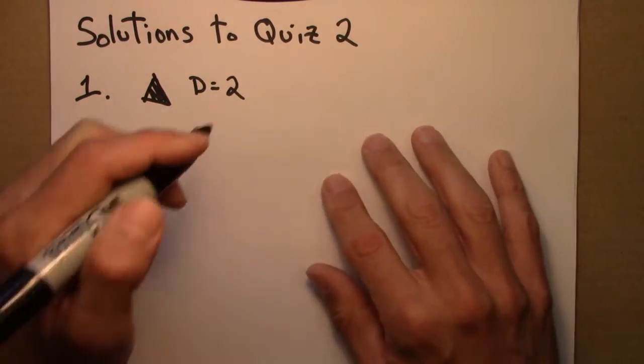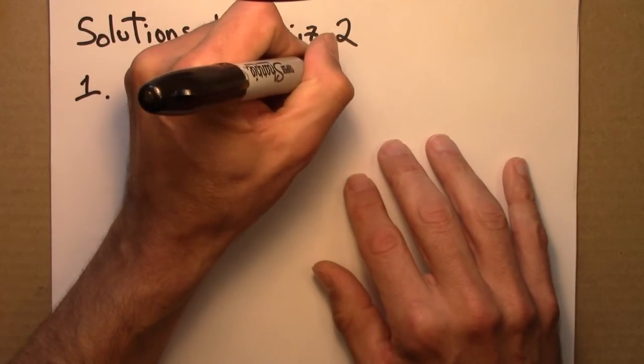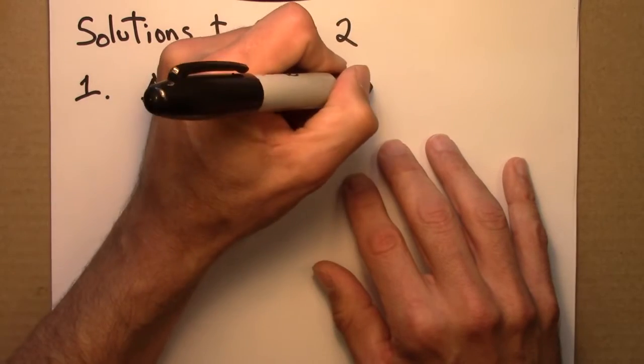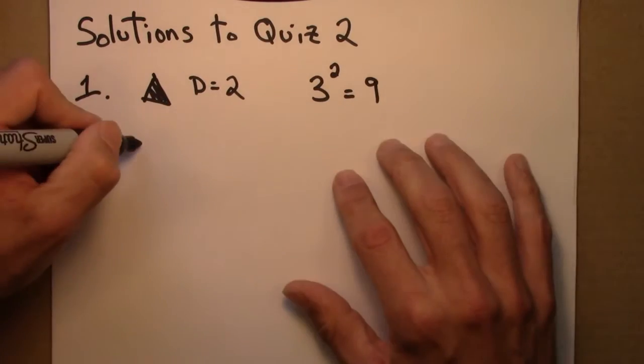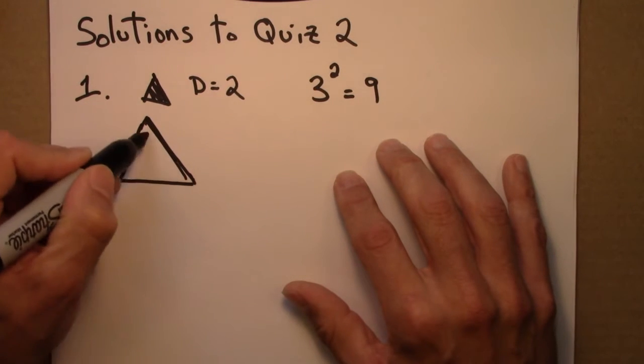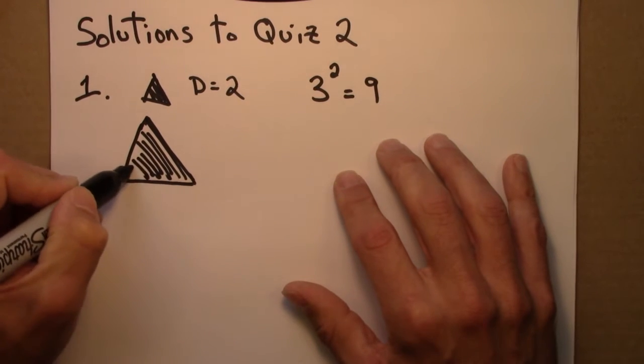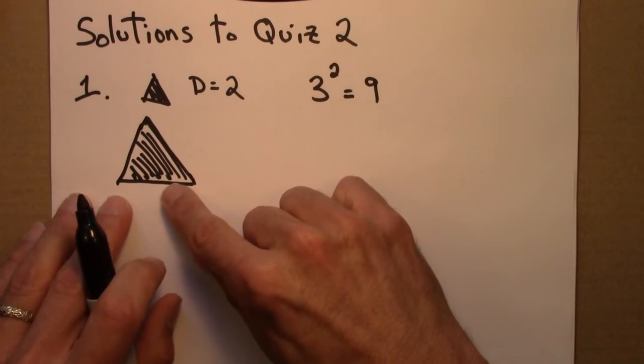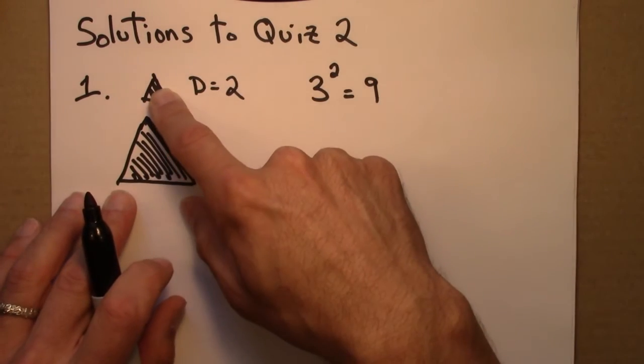What would happen to the area if I scaled this up by a factor of 2? Sorry, 3, excuse me. 3 squared would be 9. If I scale this up by a factor of 3, the area is 9 times what it was before.